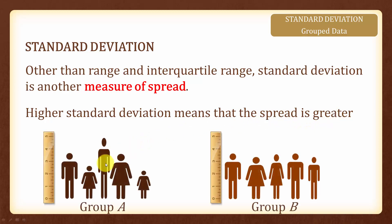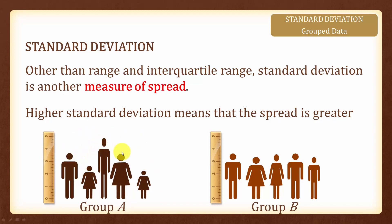Here we have two groups of people, group A and group B, each group having 5 people. If we measure the heights of these two groups, which group will have a higher standard deviation? Group A will have a higher standard deviation because the spread of their heights is greater.